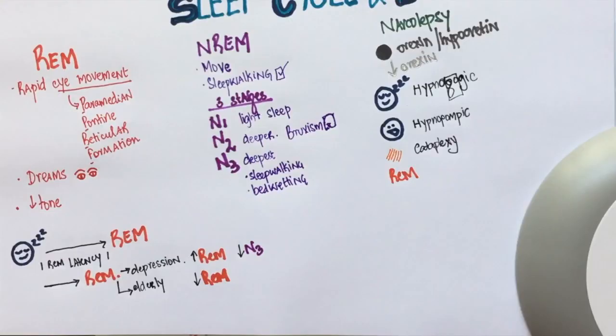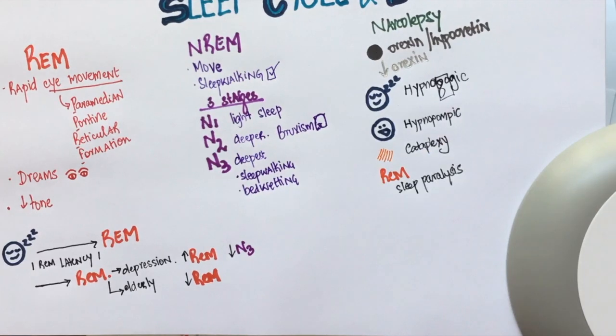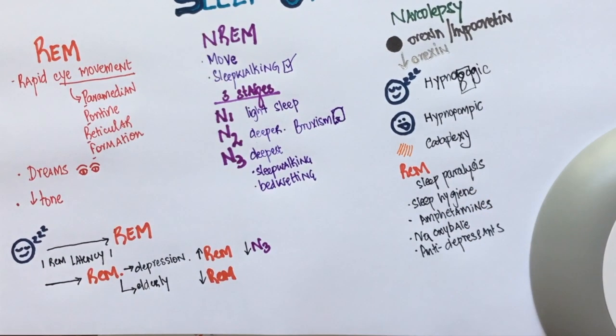Since the motor tone in the REM stage is very low, it also helps me remember that these patients experience sleep paralysis. Good sleep hygiene, sodium oxybate and stimulants like amphetamines are some of the treatments for narcolepsy. Antidepressants may also be used to suppress REM sleep.